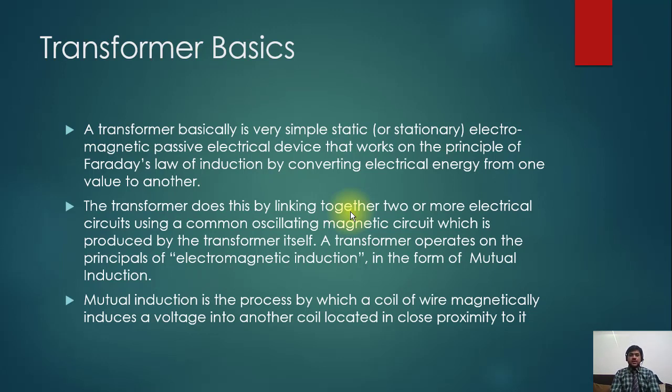This is first of all a static device—there is no moving part in a transformer. Second, the transformer is transforming voltage levels, like 11 kV to 132 kV. Is there more energy on the secondary side if it's boosting voltage from 11 to 132 kV? The answer is no. Energy remains the same. There is a law of conservation of energy—energy can neither be created nor destroyed, but can change its form. The form remains electrical when the voltage level increases or decreases.